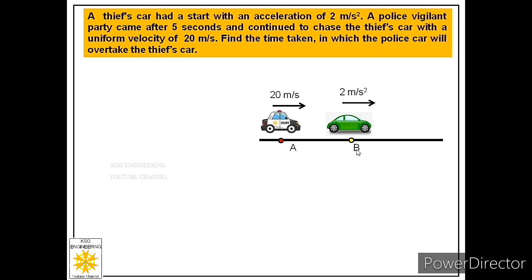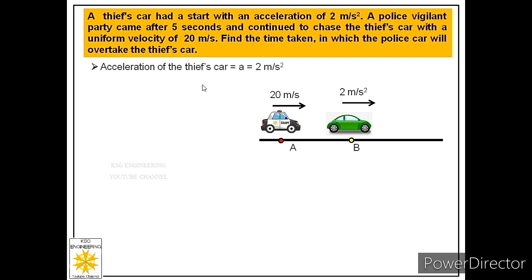We are given this situation. The thief's car had a start with an acceleration of 2 meter per second square, which means initially the thief's car was at rest. Let us assume that point of rest as point B. The thief's car had a start of 2 meter per second square from that point. A police vigilant party came after 5 seconds, meaning police reached point B after 5 seconds, and continued to chase with a uniform velocity of 20 meter per second. We have to find what time the police car will take to overtake the thief's car. So acceleration of thief's car is 2 m/s² and uniform velocity of police car is 20 m/s.